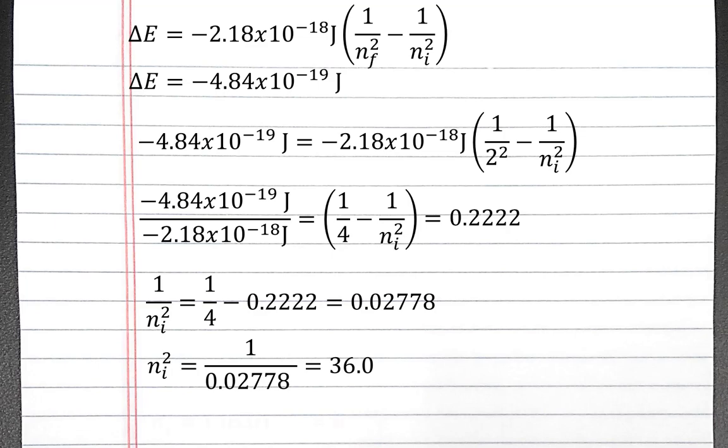To solve for n sub i, we need to take the square root of both sides. So n sub i equals 36 to the 1 half power, which is 6. So our electron should have transitioned from n equals 6 to n equals 2.